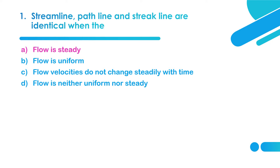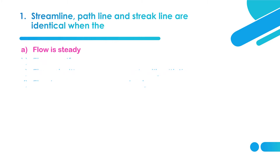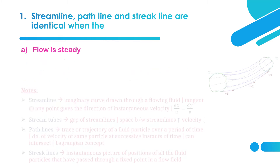So when the flow is steady, all three — streamline, path line, and streak line — are identical. Now let's see the definitions of these terms.